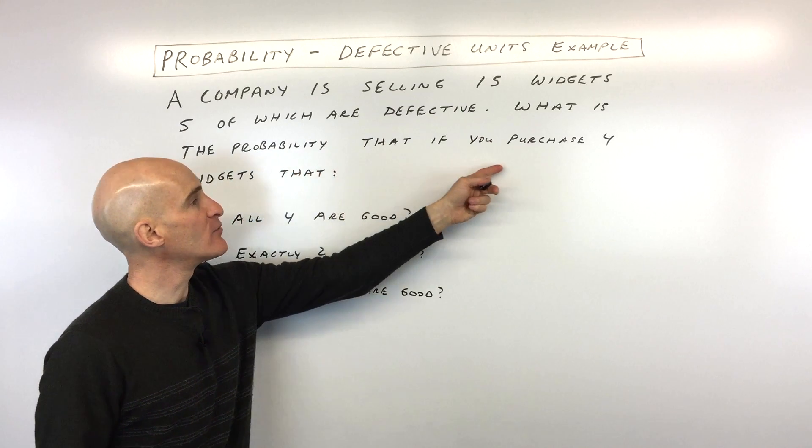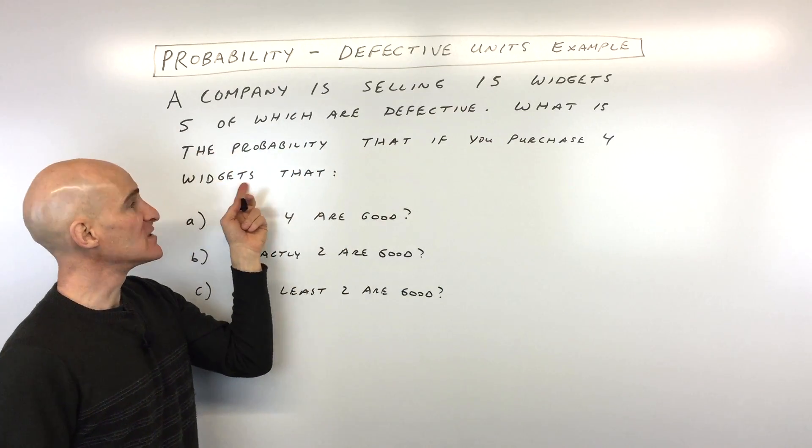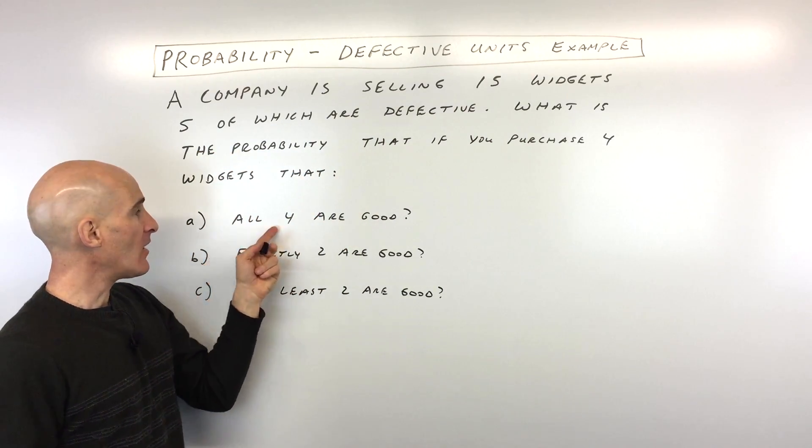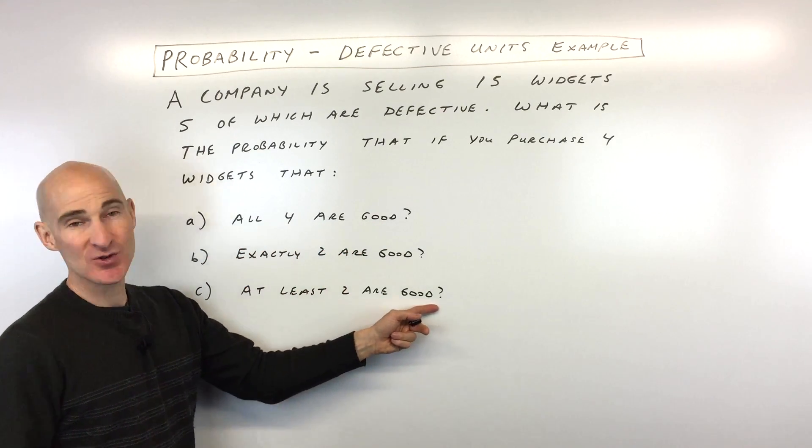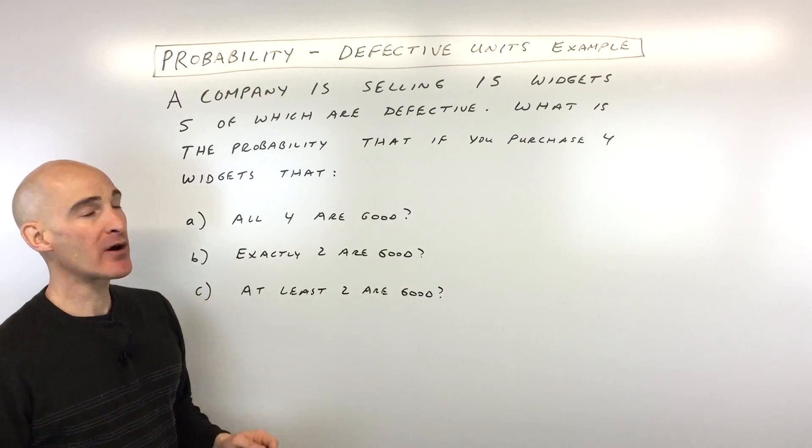And it says, what is the probability that if you purchase four of these widgets that A, all four are good, B, exactly two are good, or C, at least two are good? Okay, let's take this one part at a time.